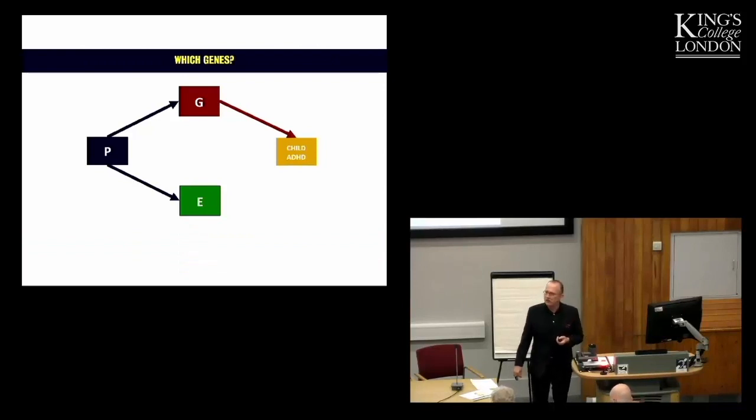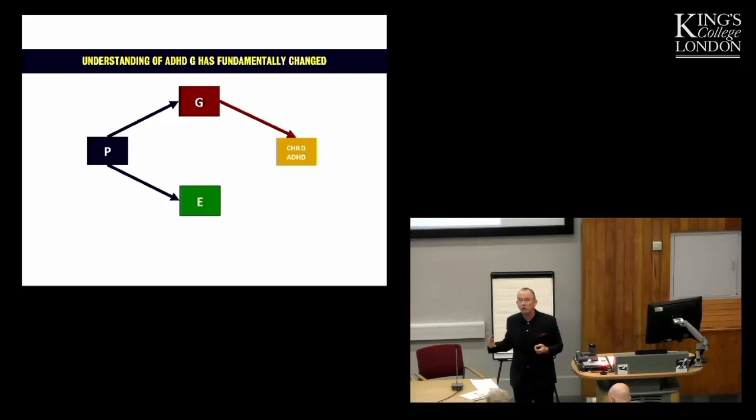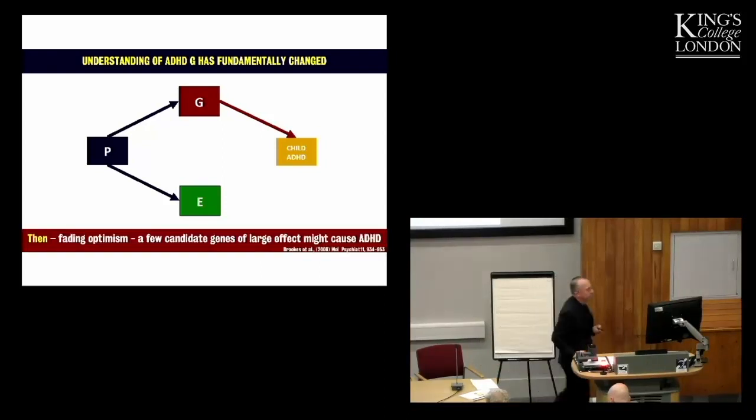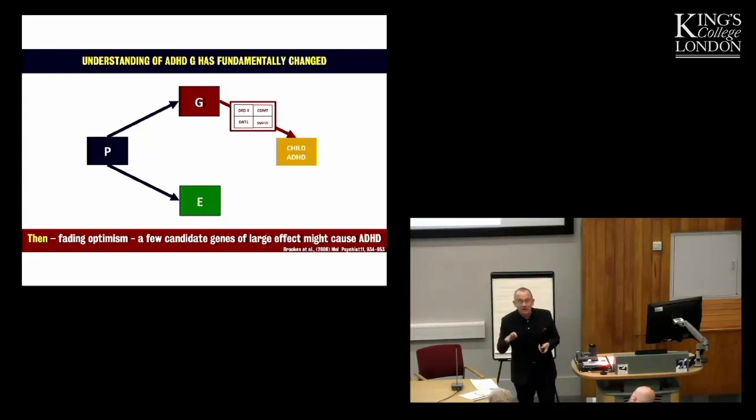Of course, which genes? That's the question. That's the first question. And the first thing to say is that understanding the genetics of ADHD has been transformed in the last 10 years. Enormous progress on our journey to this ever-disappearing destination. Then, 10 years ago, we had a kind of fading optimism that a few biologically plausible genes, particularly those that control or regulate dopamine activity in the brain, might explain ADHD.